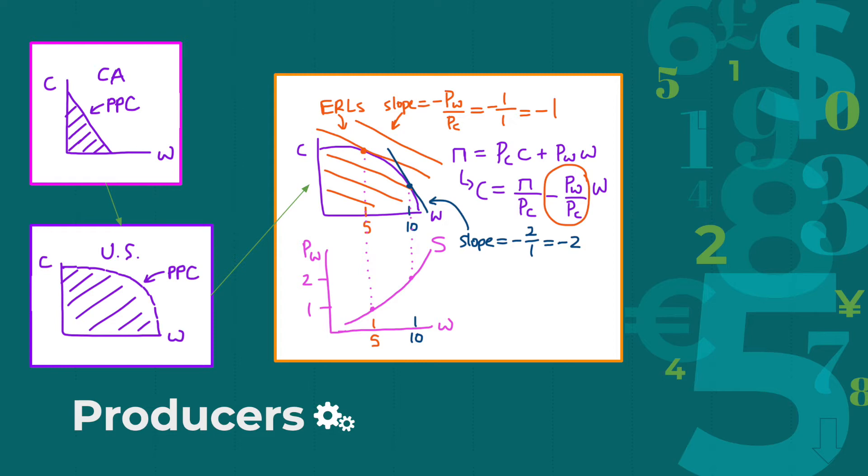Finally, we can draw a supply curve for wheat, which represents how the amount of wheat produced changes as the price of wheat, or corn, changes. So we can leave wheat on the x-axis and put the price of wheat on the y-axis. Now, let's say the price of wheat and corn are both $1 at first, meaning an ERL slope of negative 1, and that the producer decided to produce 5 units of wheat.